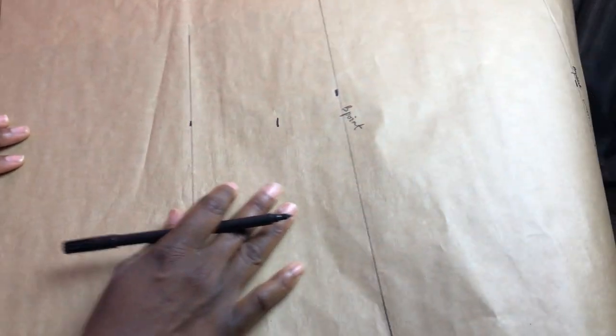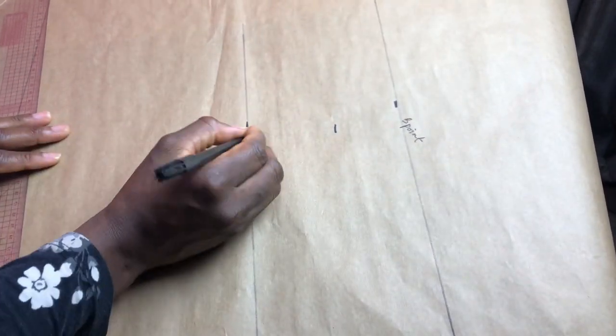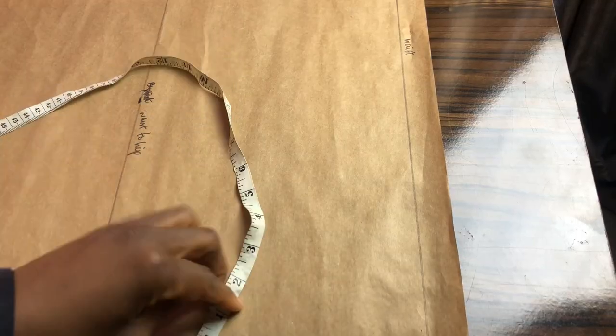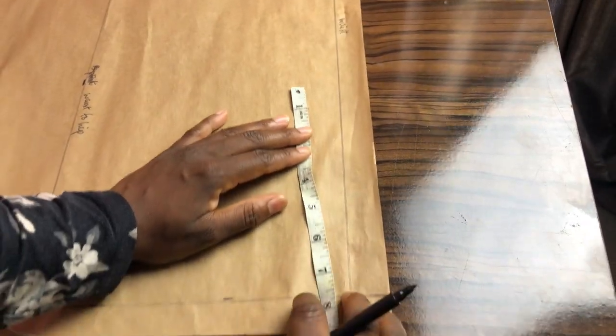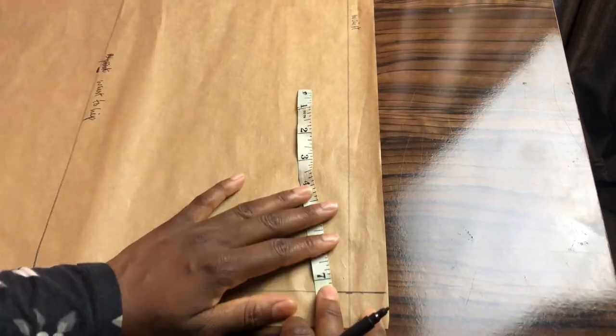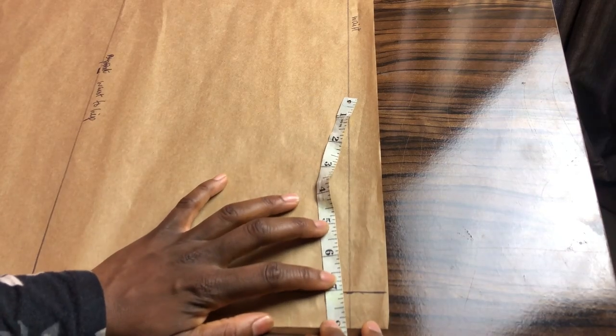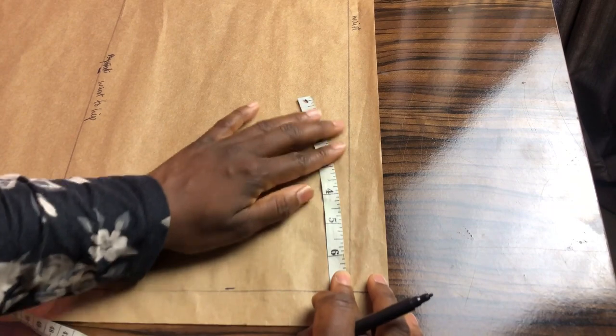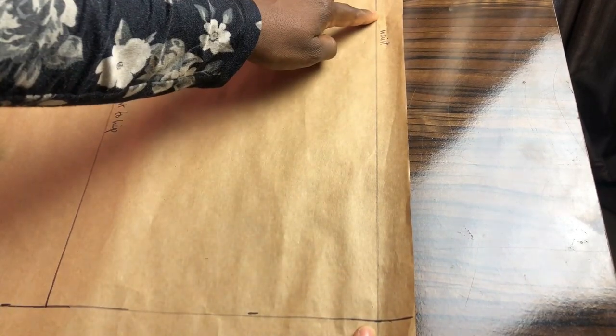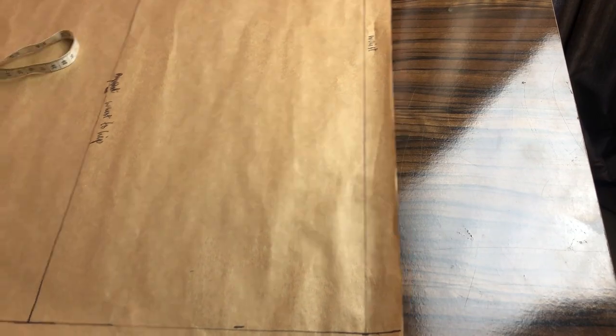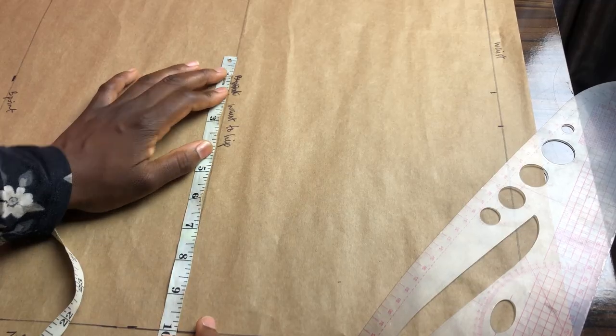Now let's input our horizontal measurement starting with the waist. My waist is 28 inches. When divided by 4 equals 7 plus my sewing allowance. Please note that you are taking all measurements from the zip line, not the edge of the paper.